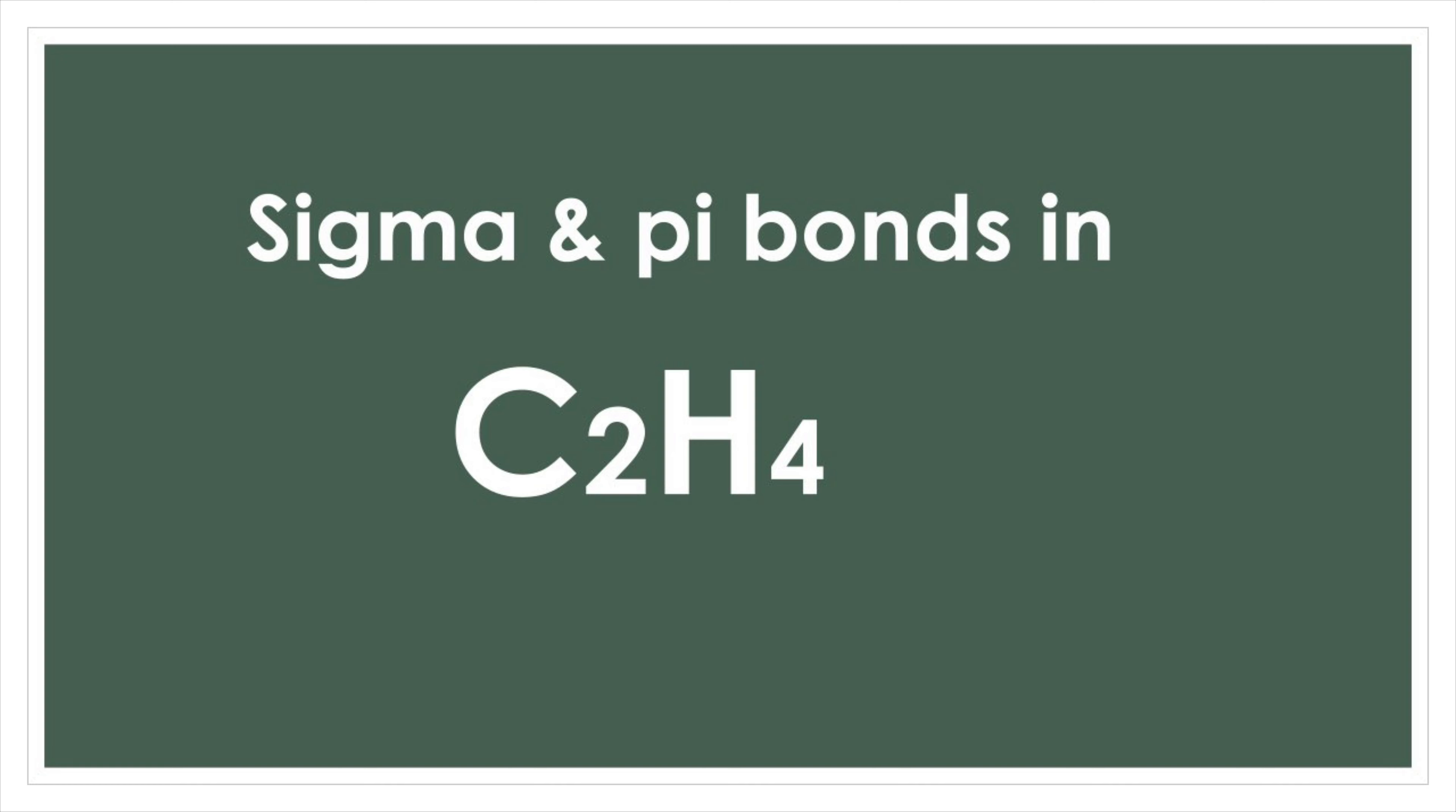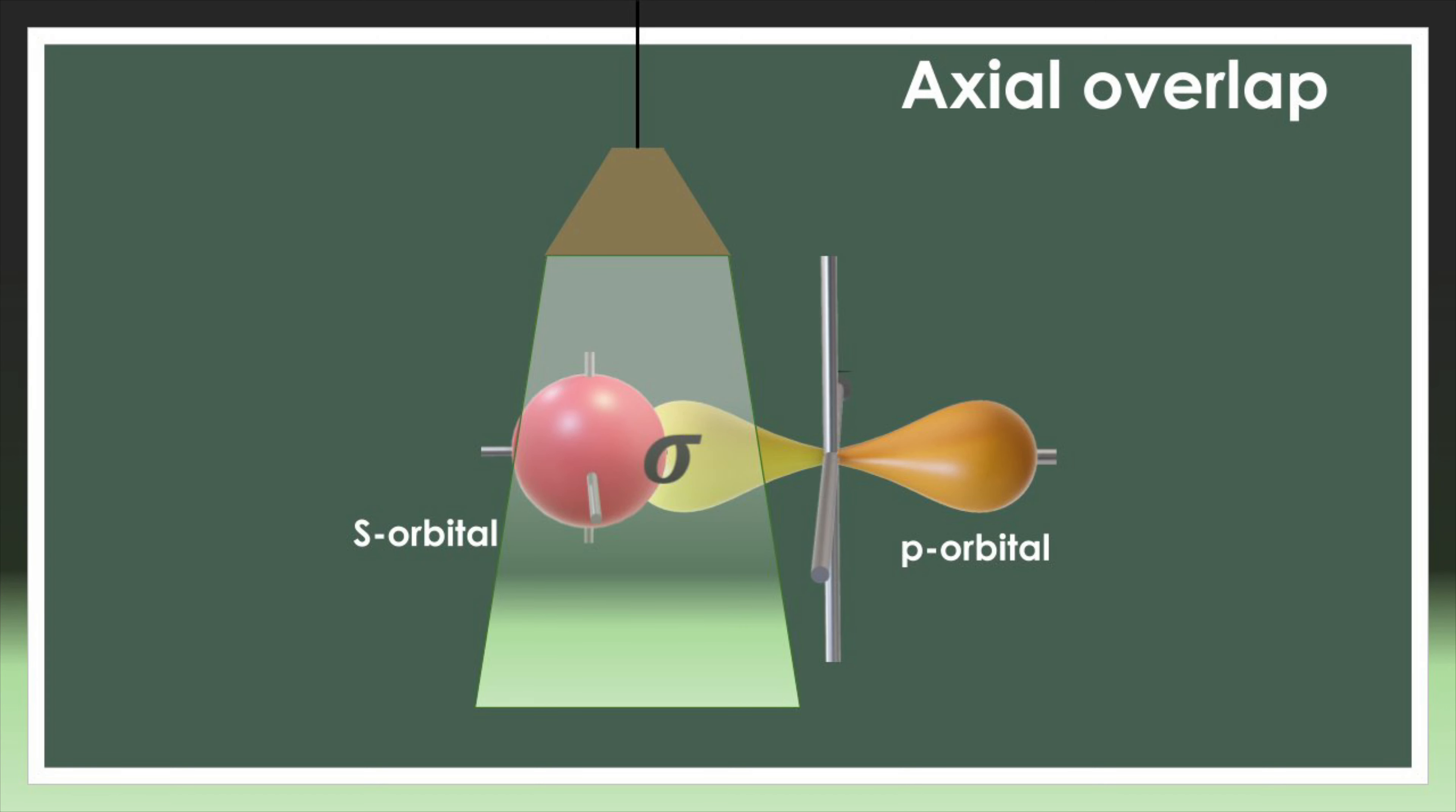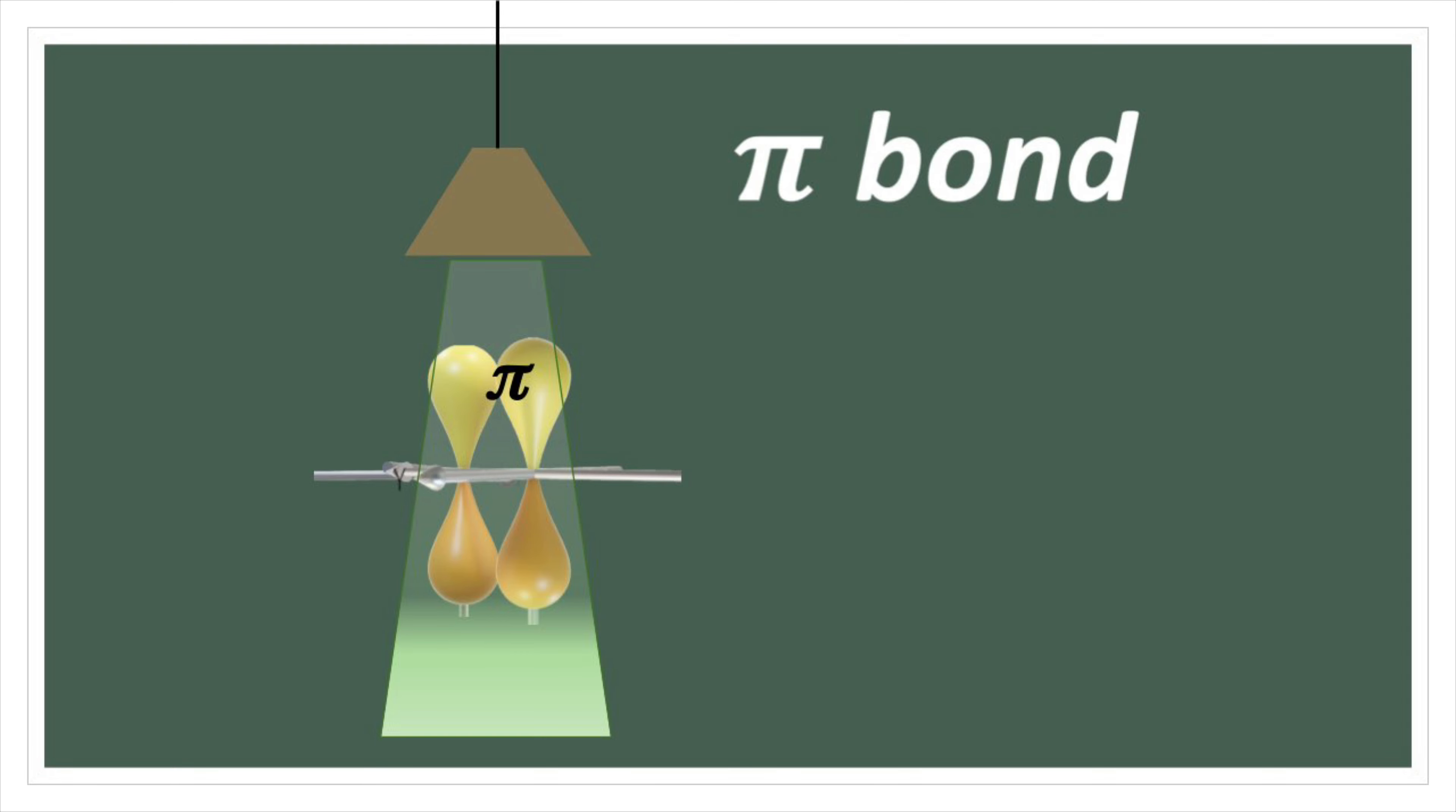Welcome to Aurora chemistry for everyone. Let us analyze how to find the number of sigma and pi bonds in C2H4. Sigma and pi bonds are types of covalent bonds which are formed by overlapping of orbitals.